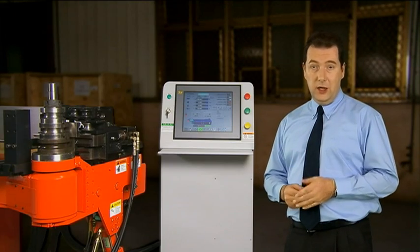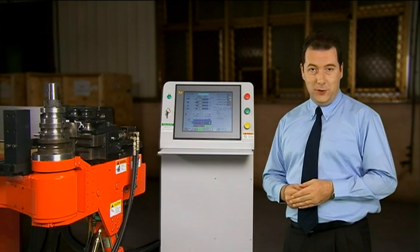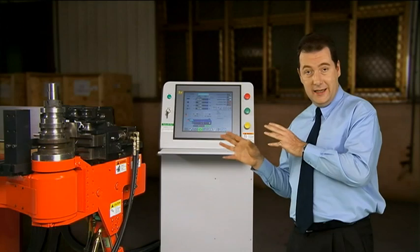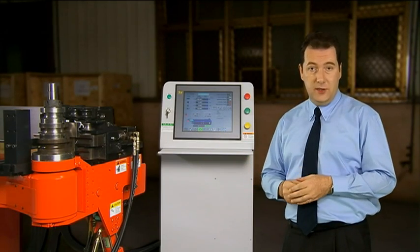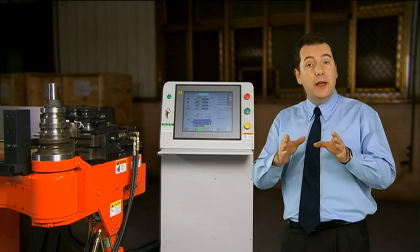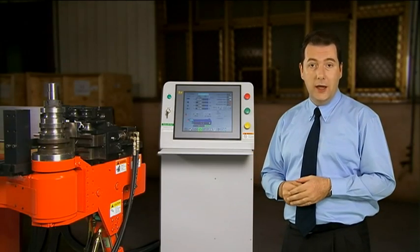The features on this machine really do make it something special. First we have the pipe bending die. This die allows for all different shapes and sizes of material as well as allowing the function of push bending when required.